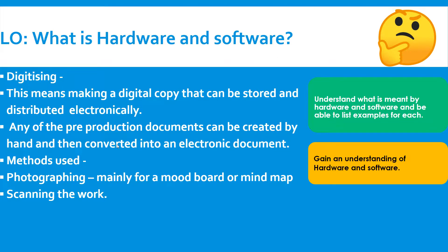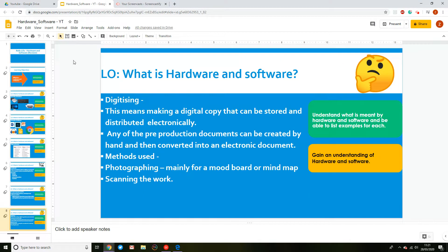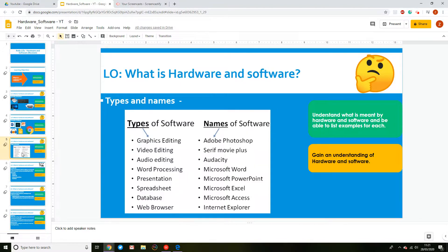Please bear in mind in particular the difference between types of software and names of software — they are different things. If the question says 'type,' use the type categories. If it says 'names,' use the specific names.